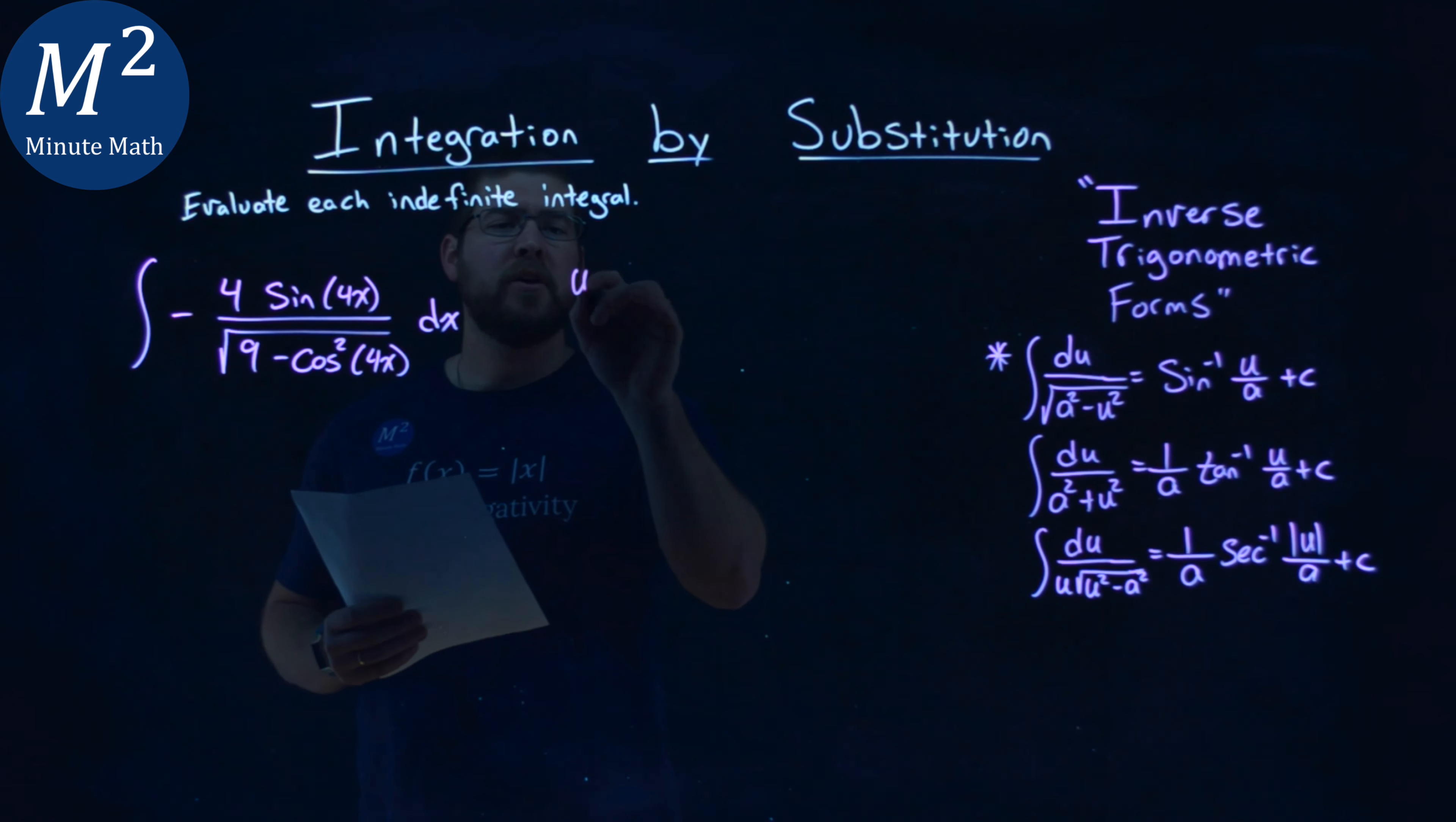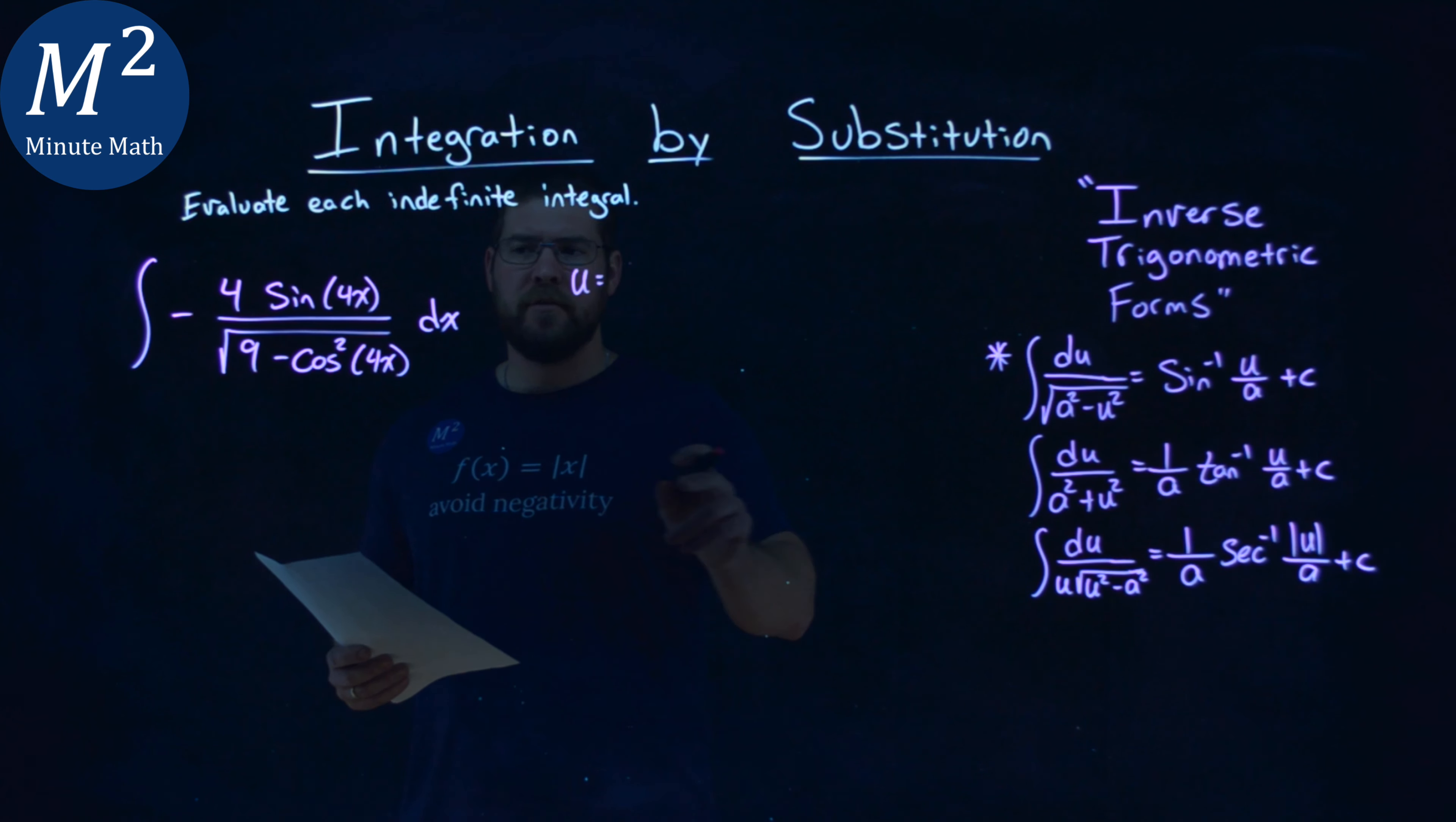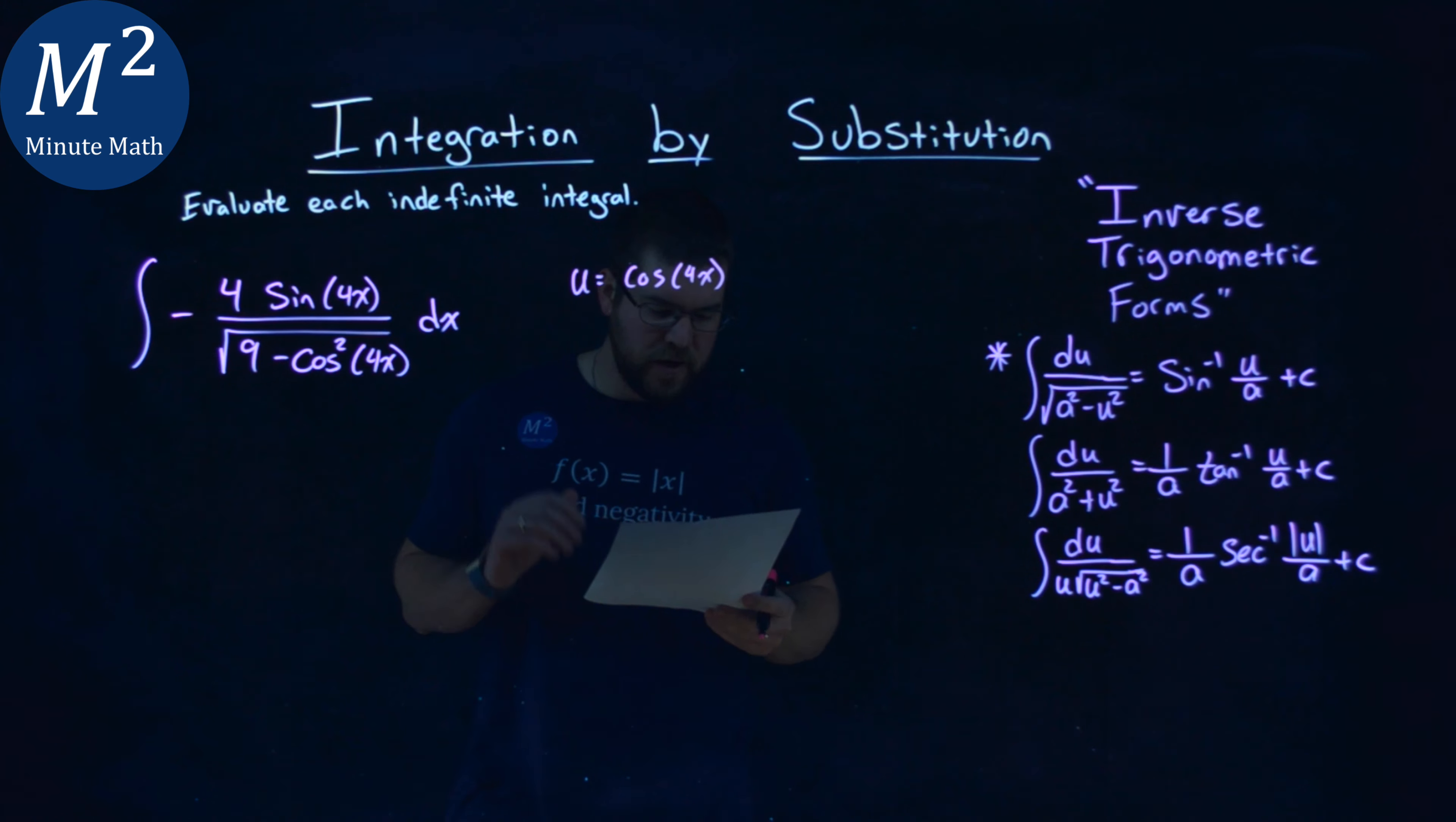First, I want to find a u-value that works. Looking at this, I see it's pretty close to my arc sine form here. I have an a-value squared and a u-squared here. So if that's the case, u-squared is given right here, and my u-value is the cosine of 4x. Let's try that and see what happens.